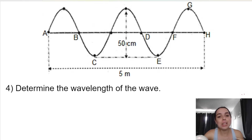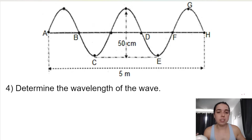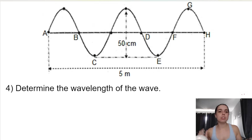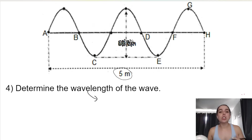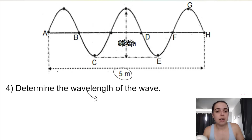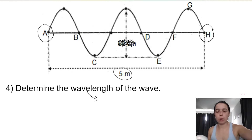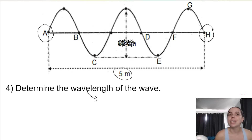Our last question, which can be quite tricky and is how they can ask it in exams, is to determine the wavelength of the wave. The 50 centimeters vertical distance has nothing to do with wavelength. Wavelength is the distance between two successive points in phase — it's a horizontal distance. So we disregard the 50. The only horizontal distance given is five meters. But five meters is not the wavelength, because the wavelength is the distance between two successive points in phase, and five meters is the distance between A and H, which are not successive points in phase — they're not even in phase.